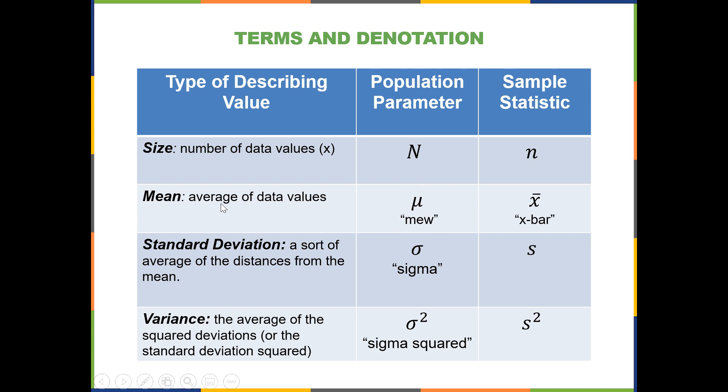The mean, or average of data values, if it's from the population, we would use the Greek letter mu, pronounced just like the kitty says, not the letter M, not the letter U, but mu. And then we have X bar, which is the sample statistic denotation.